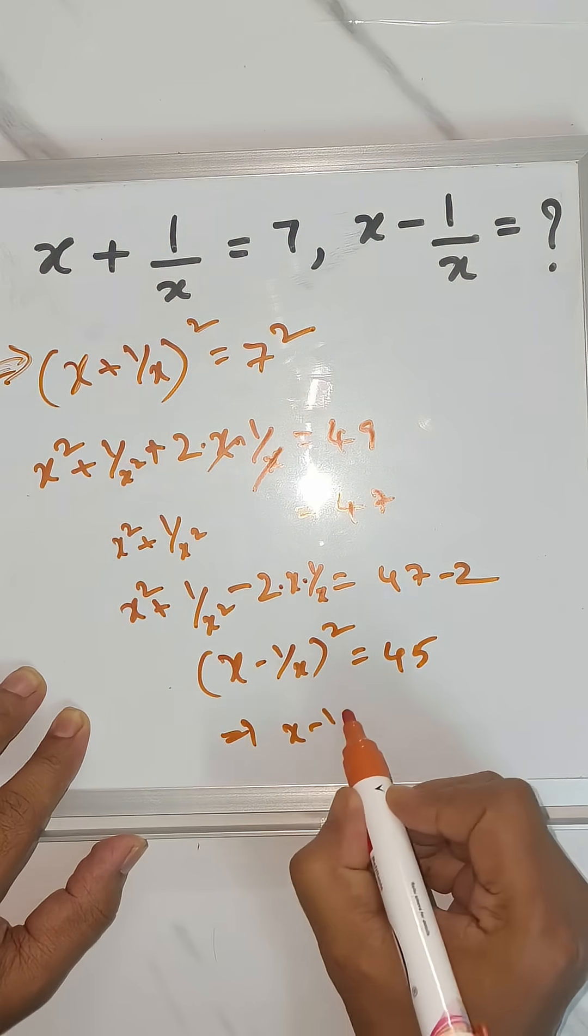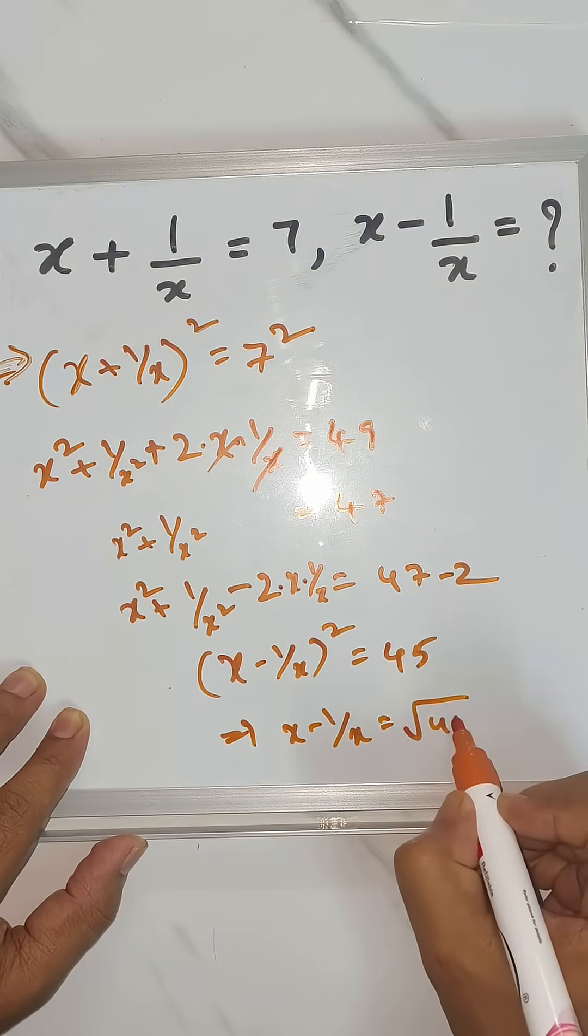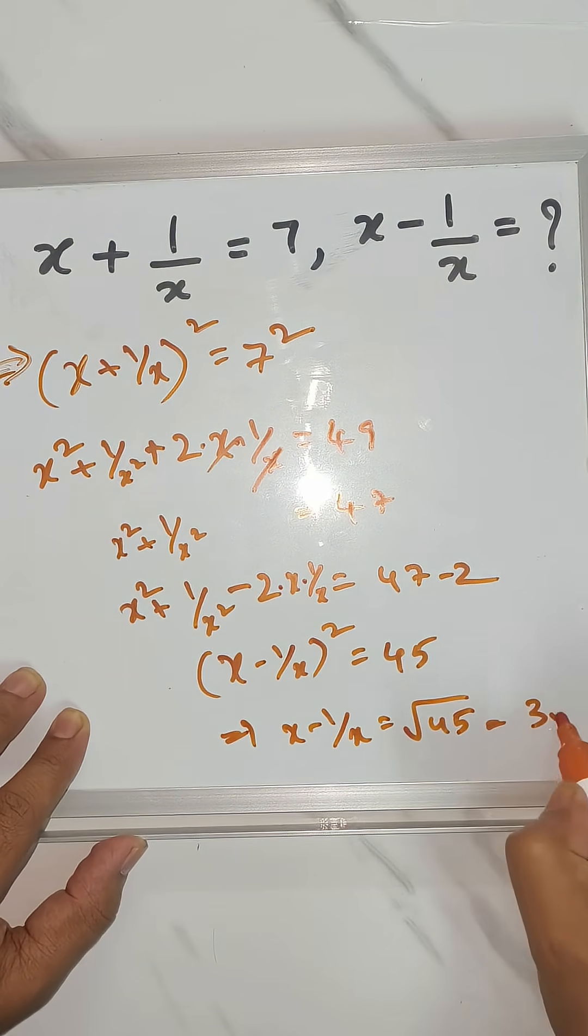So our answer is x minus 1/x is root 45, which is 3 root 5.